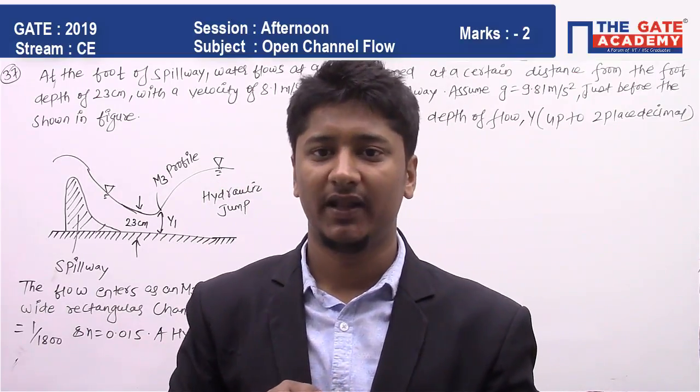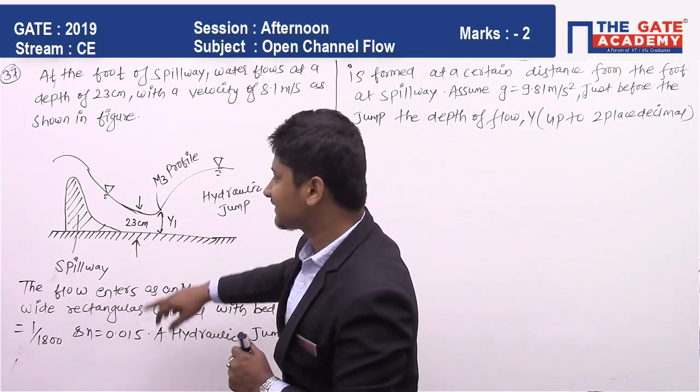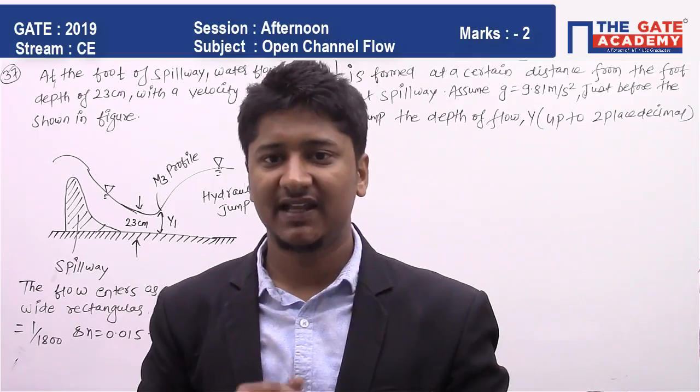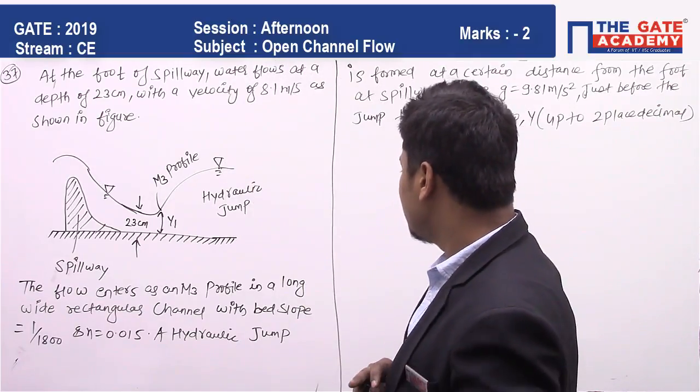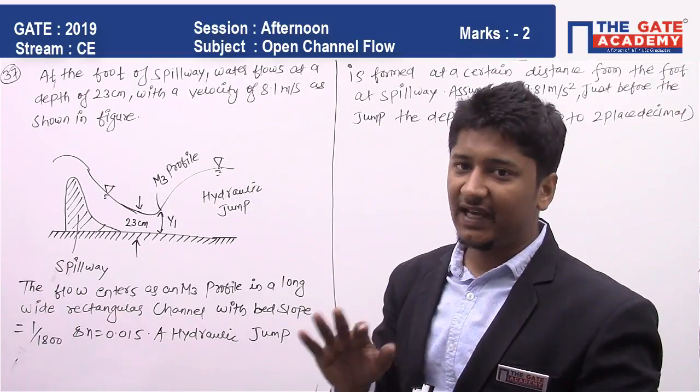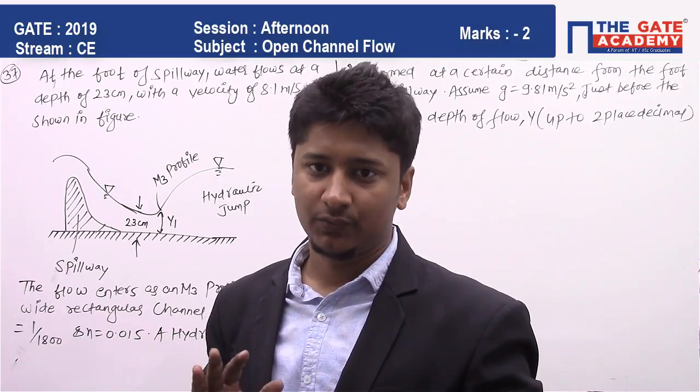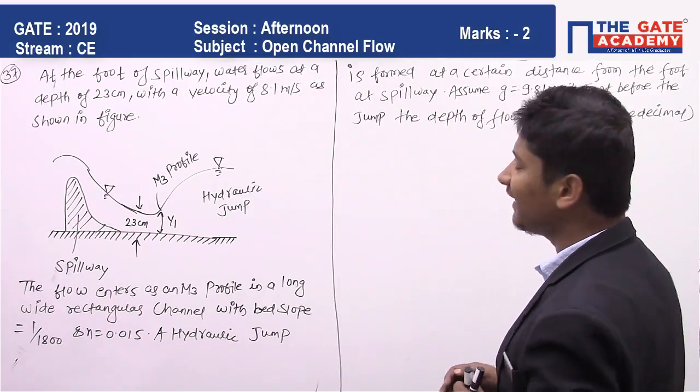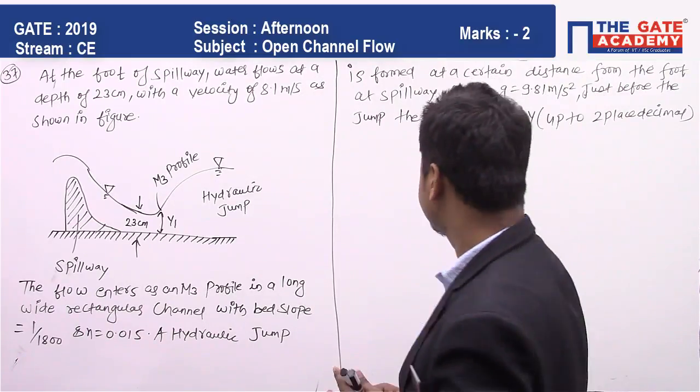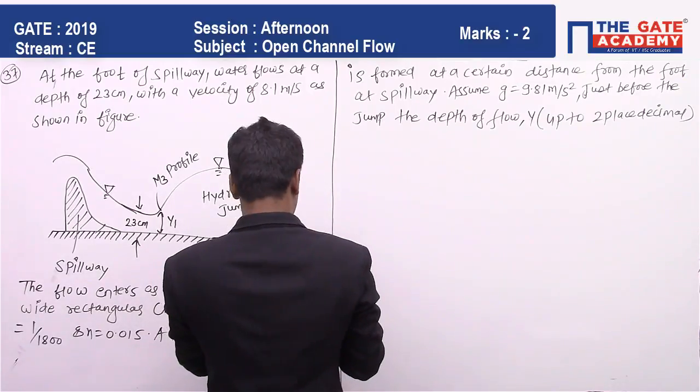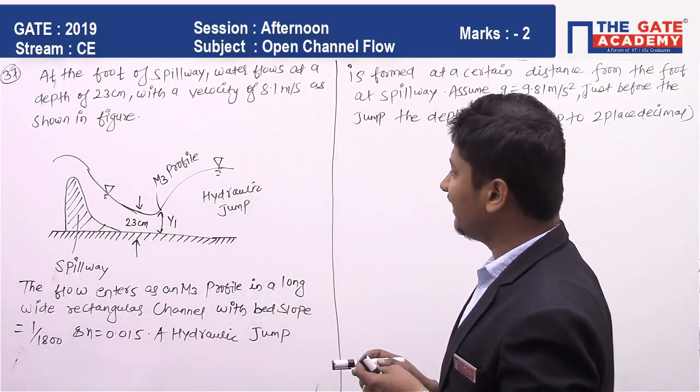For that, a pre-jump depth is required - that is, your supercritical depth. So they are asking for the supercritical depth. The question is very lengthy but the solution is very easy. You just have to read this whole part and write the given data.